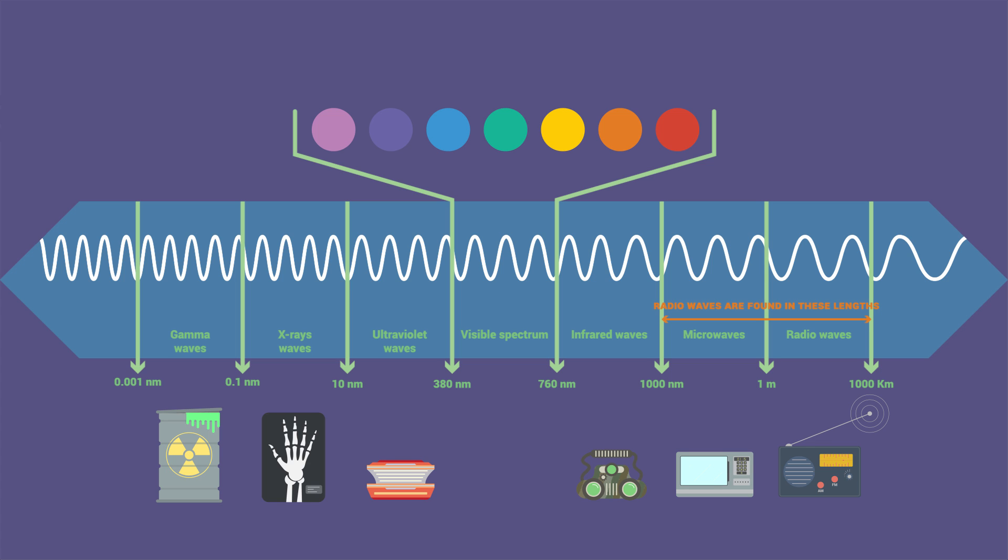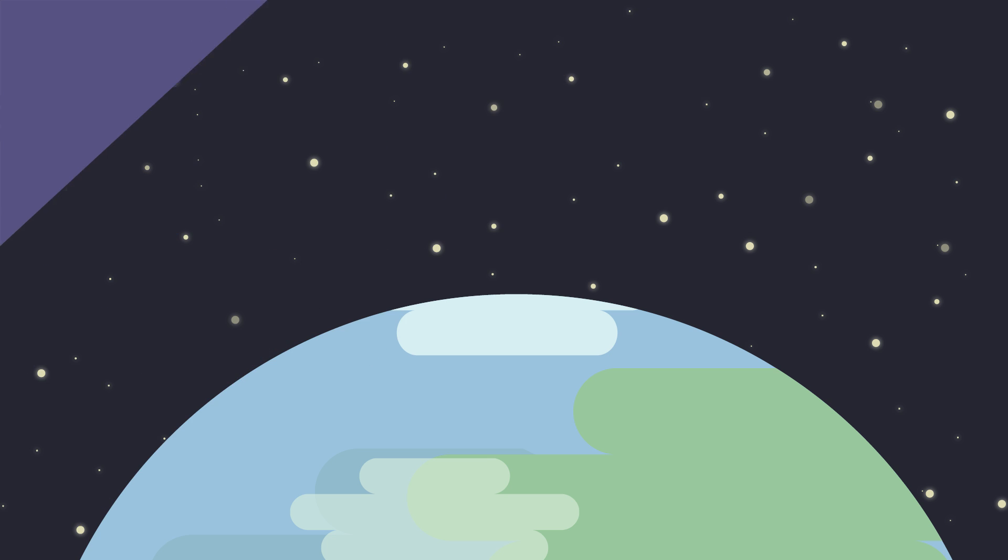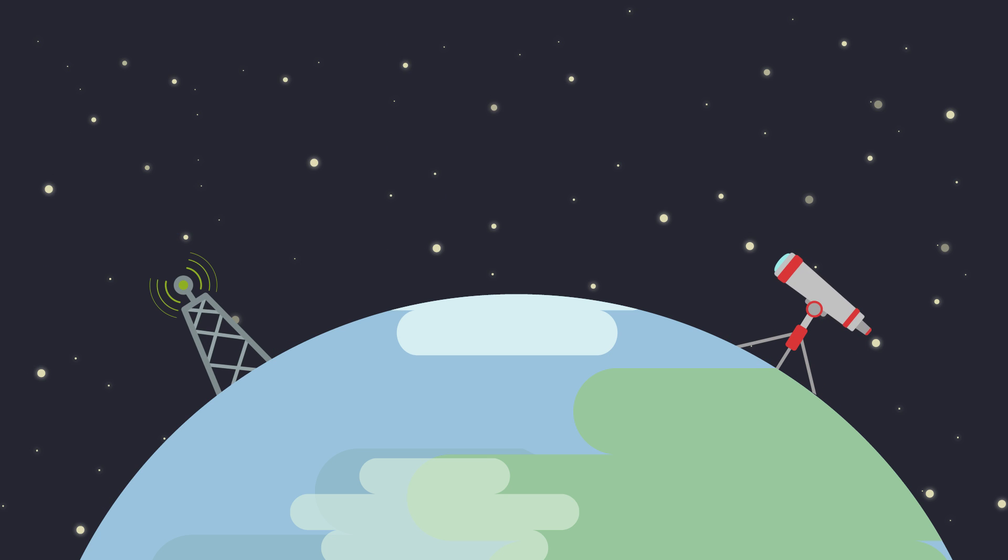And because evolution didn't provide us with organs to detect other wavelengths, we are trying to fill that deficiency with machines that can see for us. Human inventions help us learn about our environment and our place in the universe in which we live.